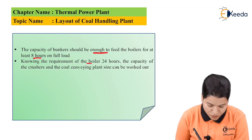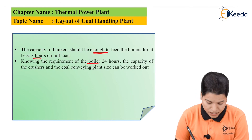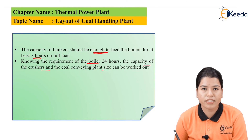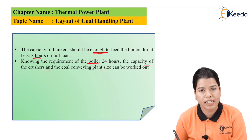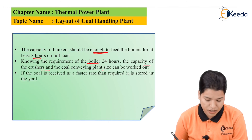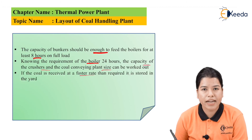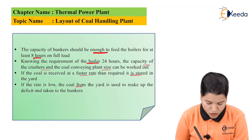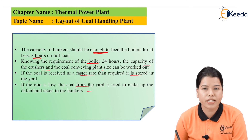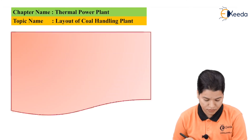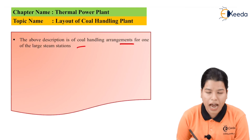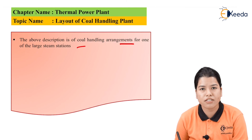Knowing the requirements of the boiler for 24 hours, the capacity of the crusher and the coal conveying plant size can be worked out. Depending upon the capacity of the boiler, the capacity of the crusher and the coal conveying plant must be decided. If coal is received faster than required, it is stored in the yard; and if the rate is low, coal from the yard can be used to make up for the deficit. The above description of the coal handling plant arrangements is for a very large steam power plant.